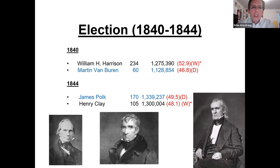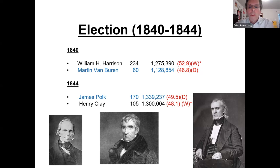Tyler was very unpopular because he didn't comply with Whig political ideology. So James Polk was selected as the Democratic candidate and Henry Clay became the Whig candidate — Clay a third-time loser by 1844, with Polk becoming president. Polk was very successful, accomplishing a lot by expanding the country's size through acquiring big territories, and is considered a one-termer who really accomplished his goals.